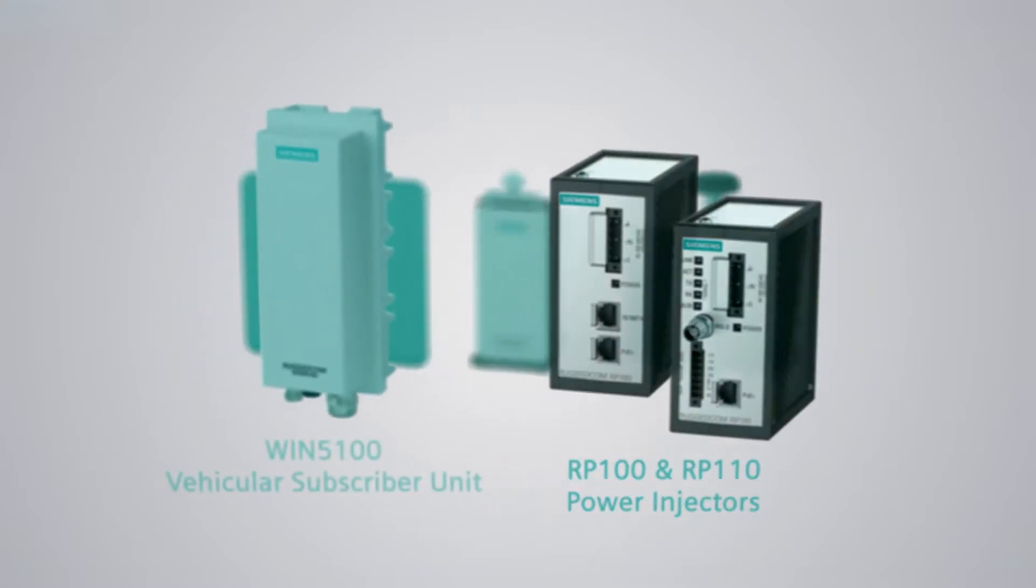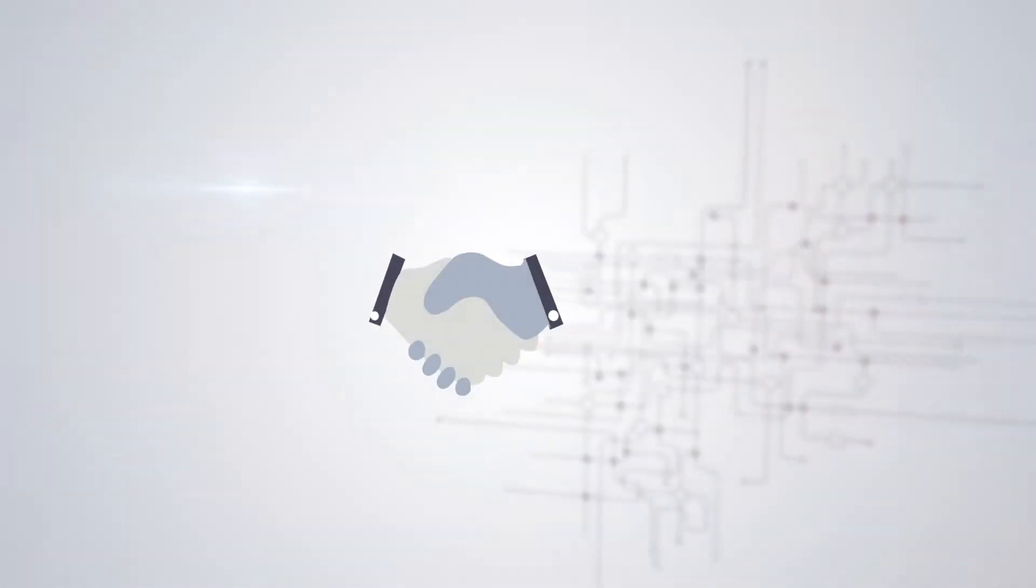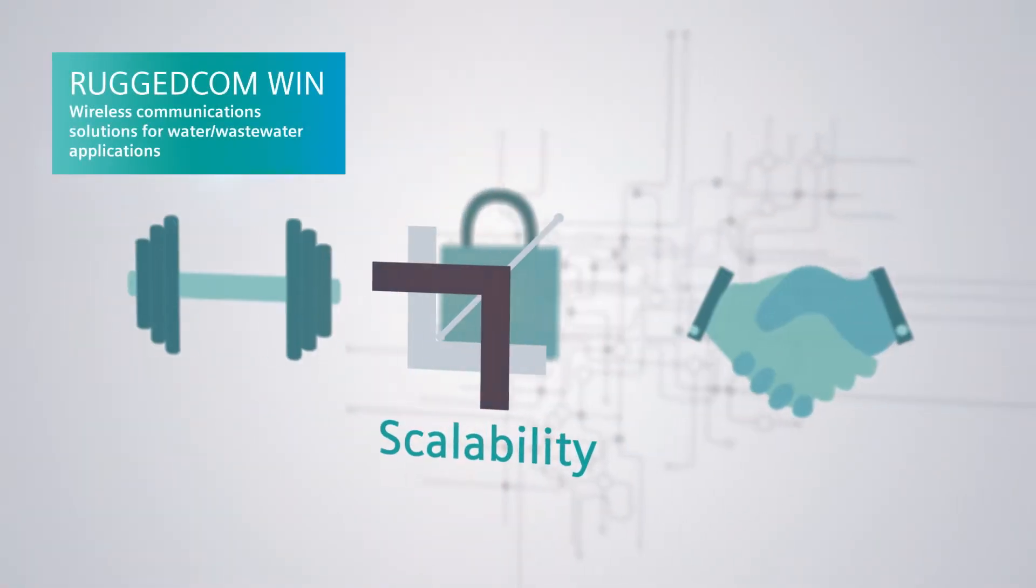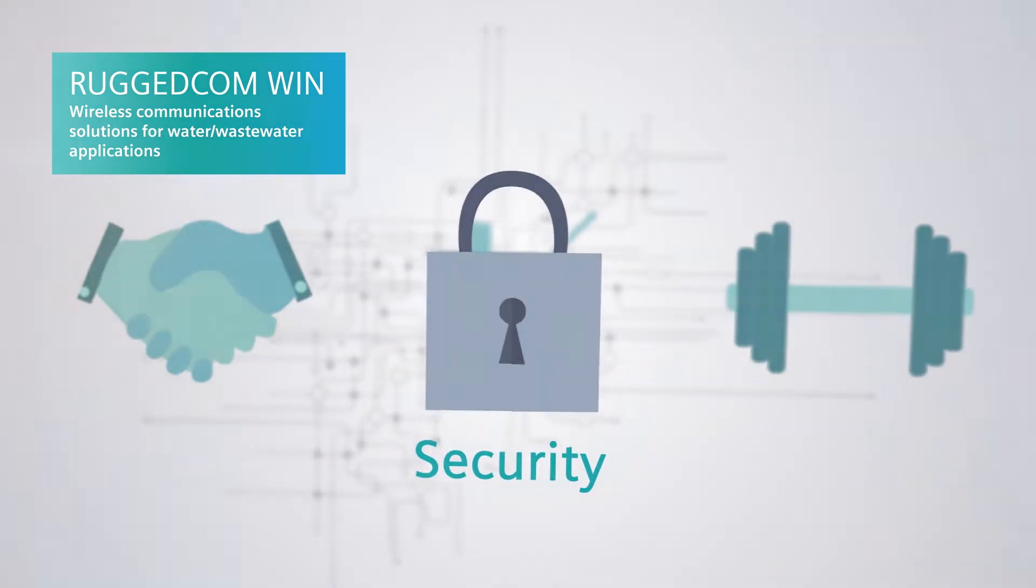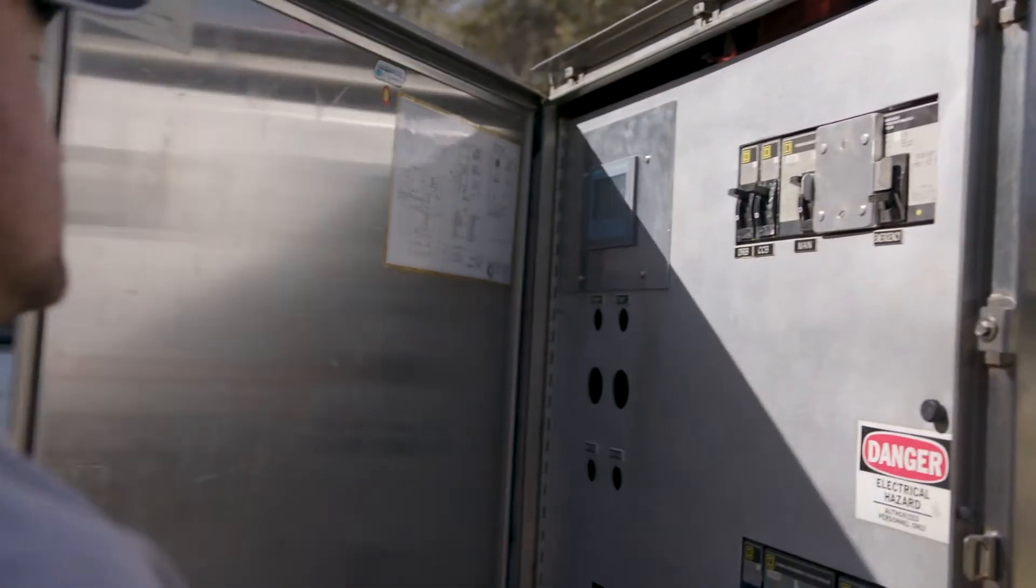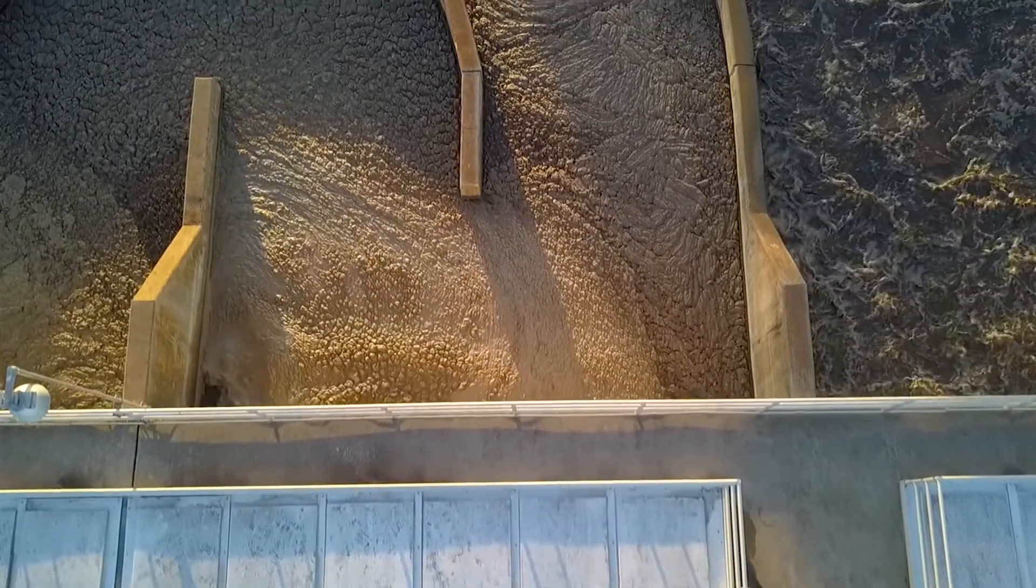Siemens Rugged Calm Wind products provide reliability, scalability, durability and security by establishing communication links to lift stations, booster pumps, water tanks, master meters and other remote locations.